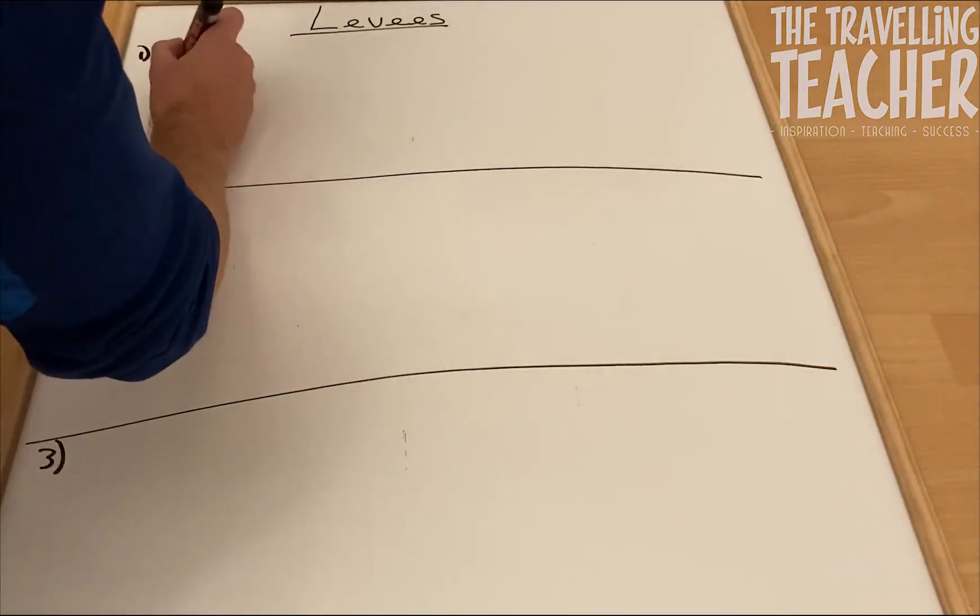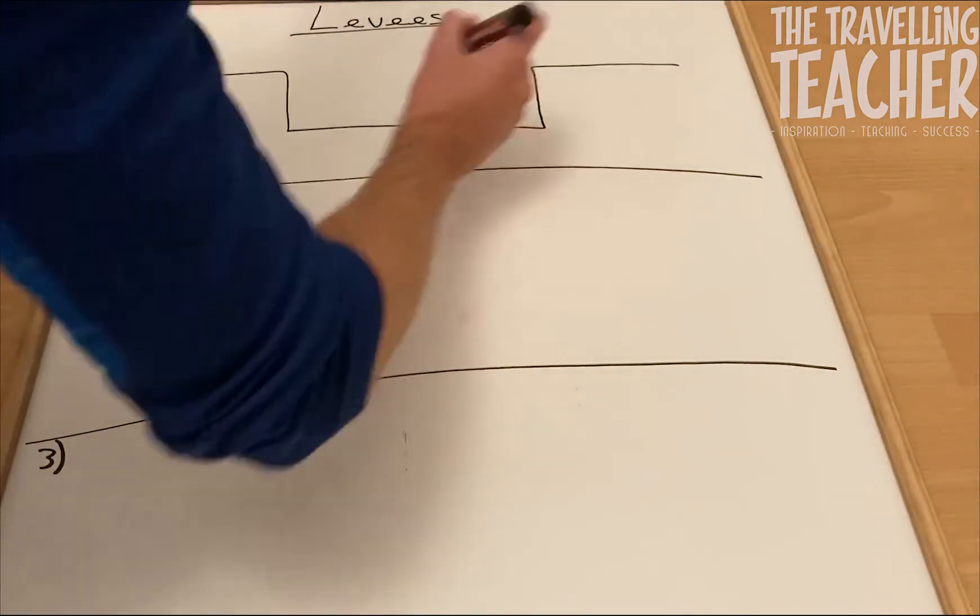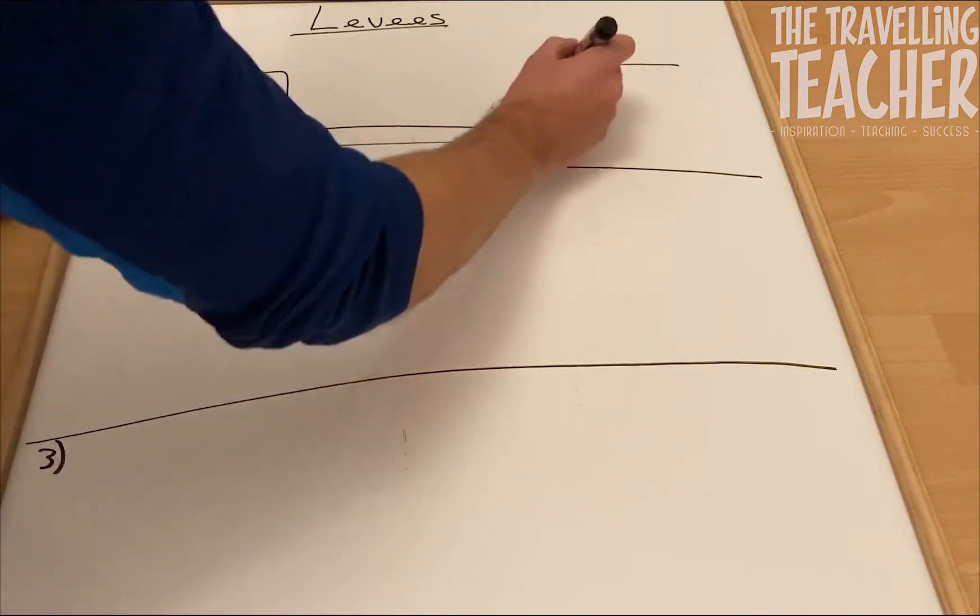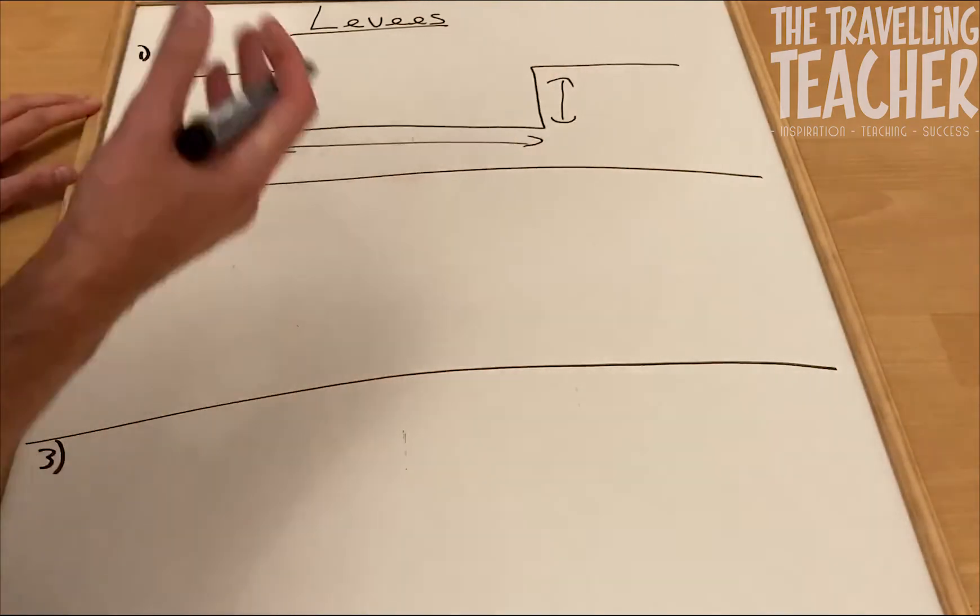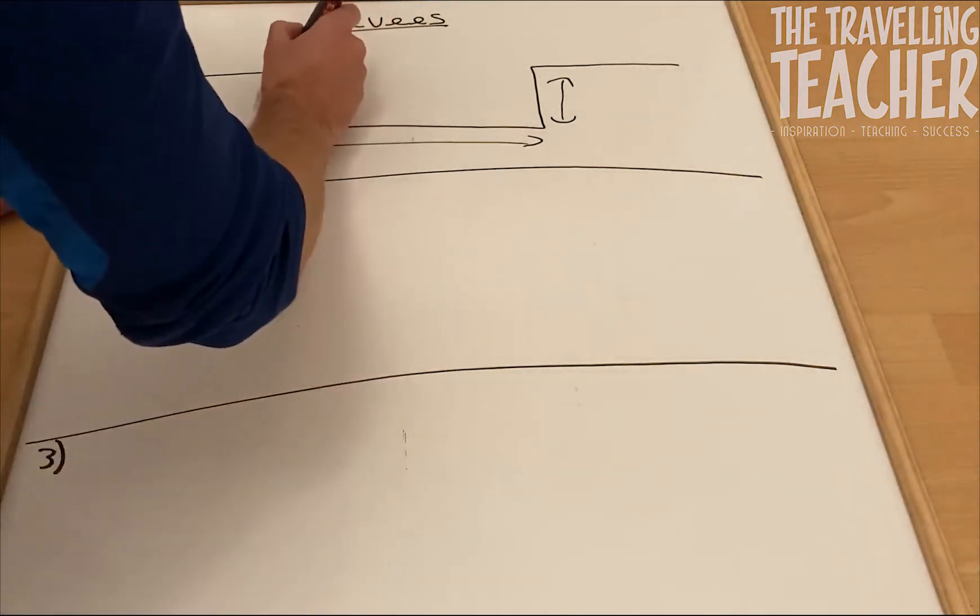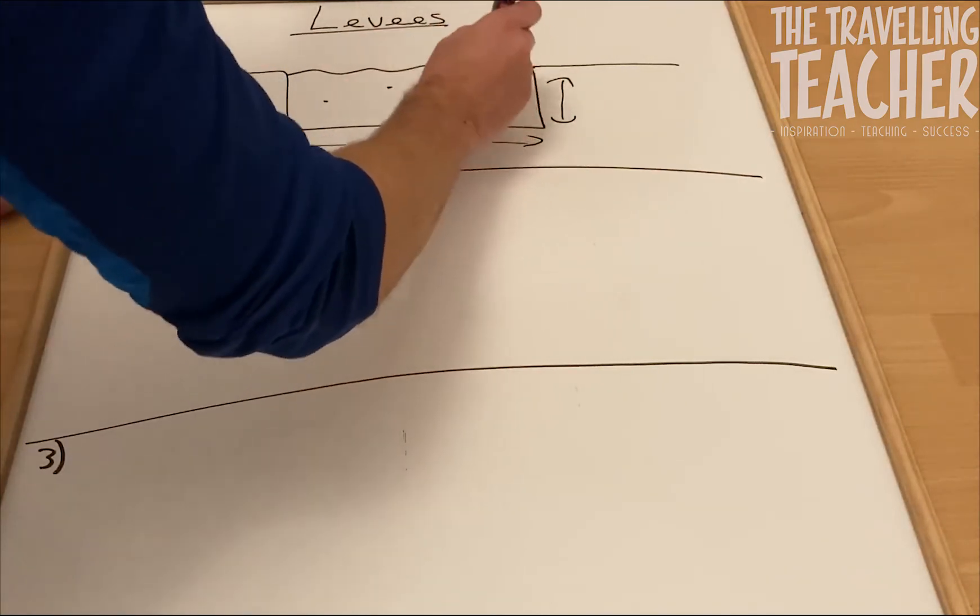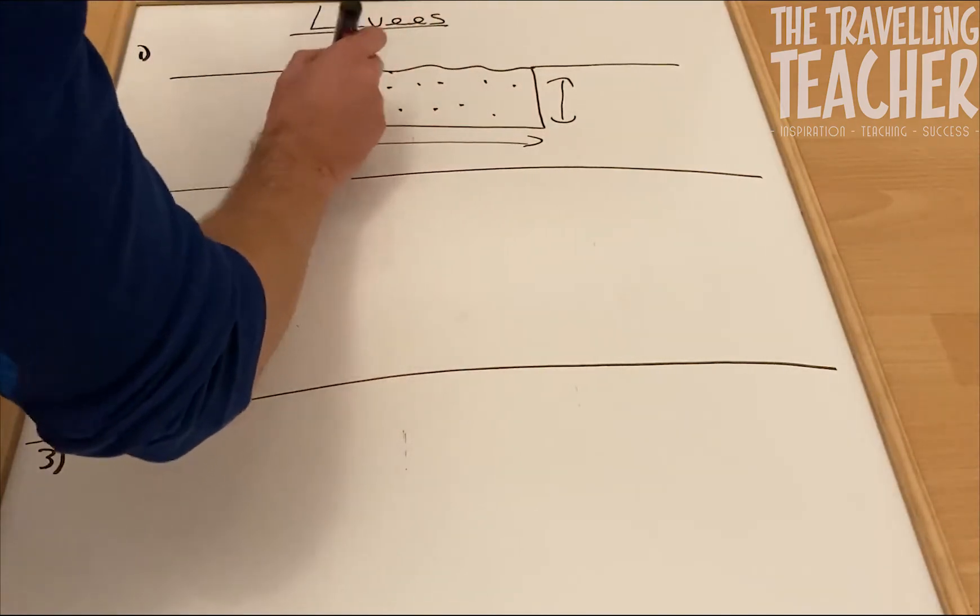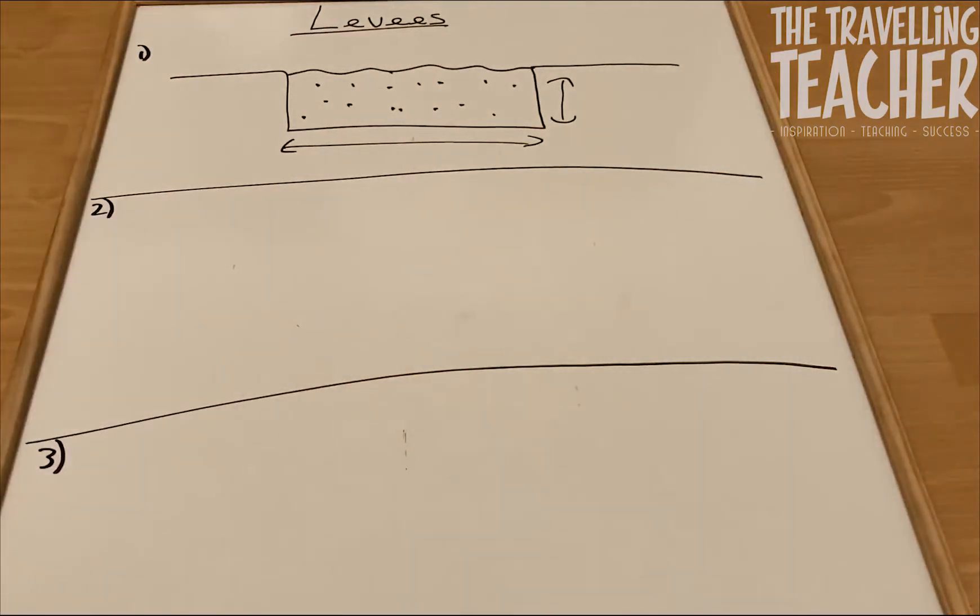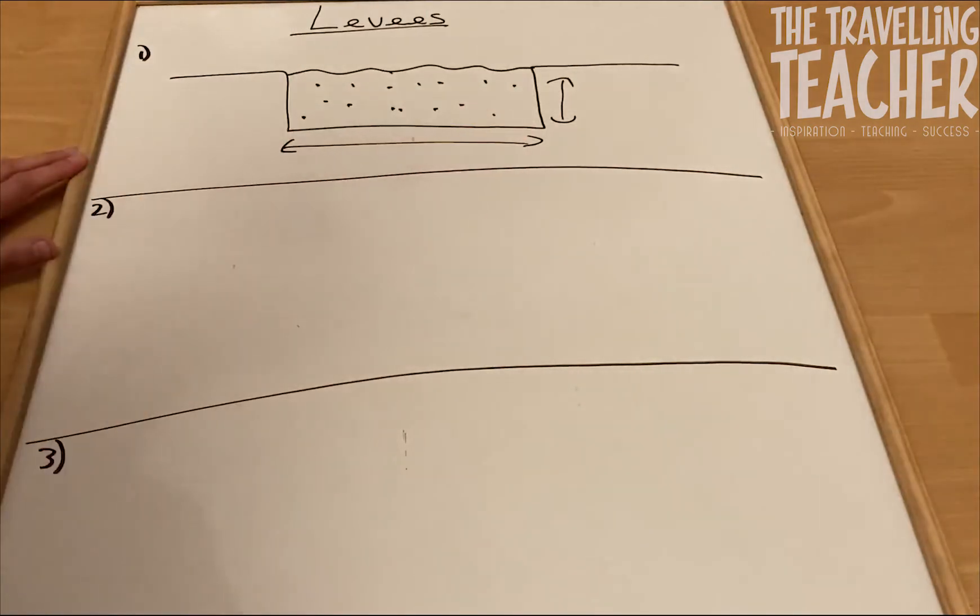So stage one, we've got our river channel. Notice that the river channel obviously is going to be quite wide and it's going to be quite deep because we're talking about the river channel in the lower stages of a river valley. So let's put on our water level. And in the river channel we've got these very small, fine pieces of sediment being transported down the river in the flow.